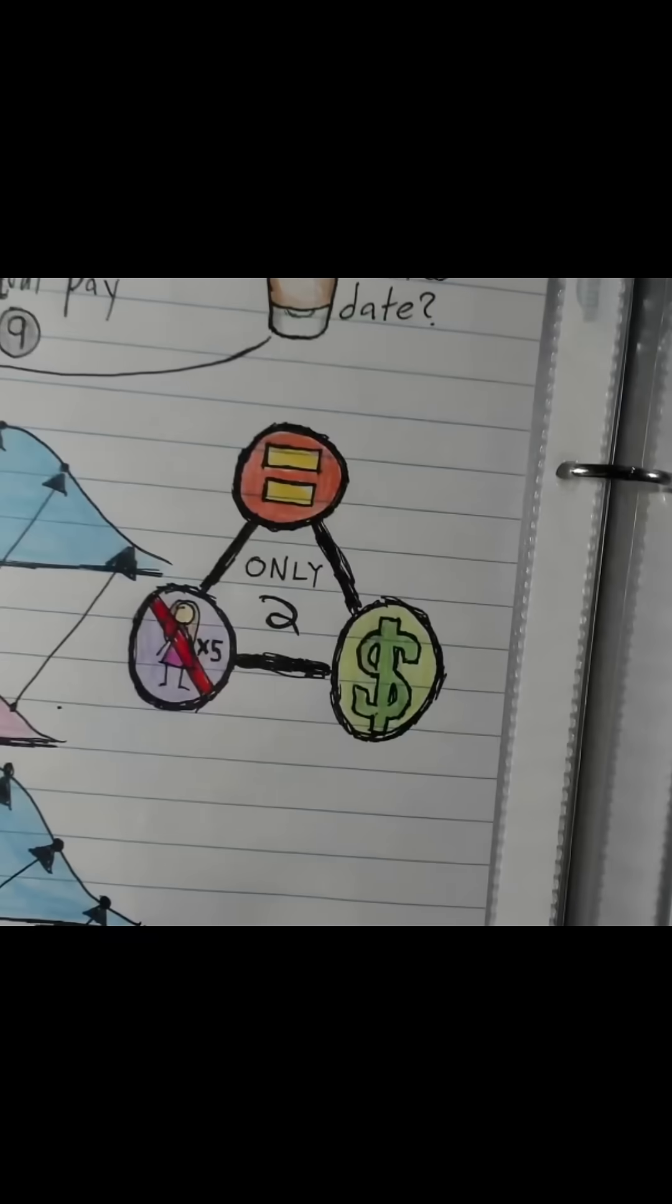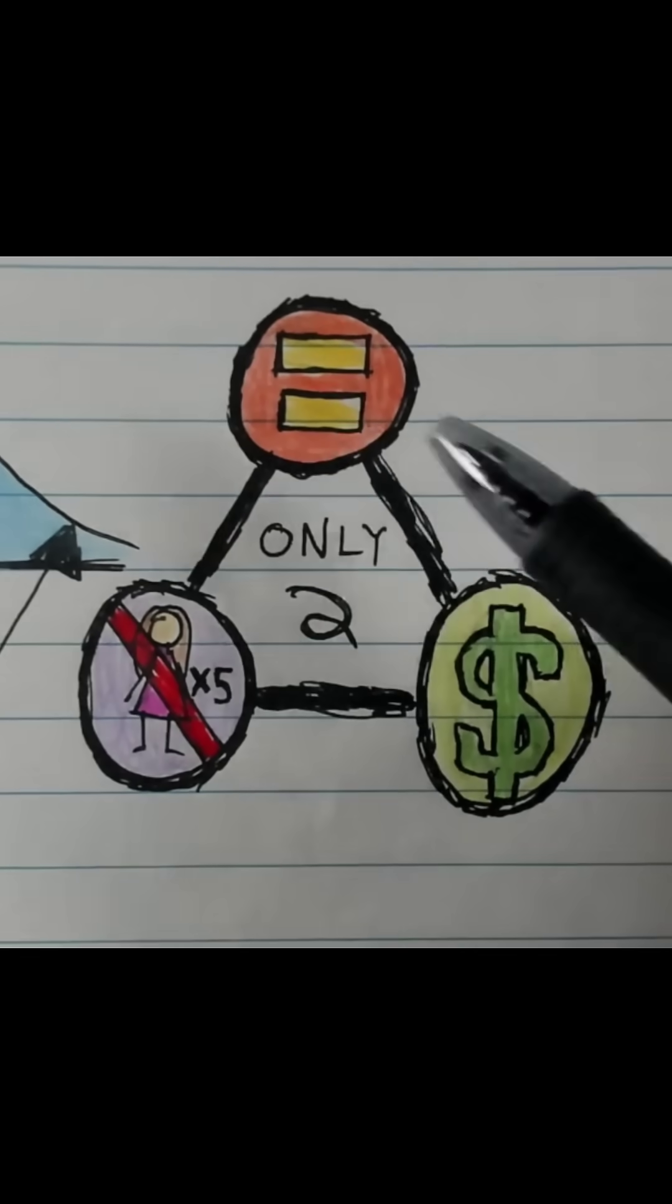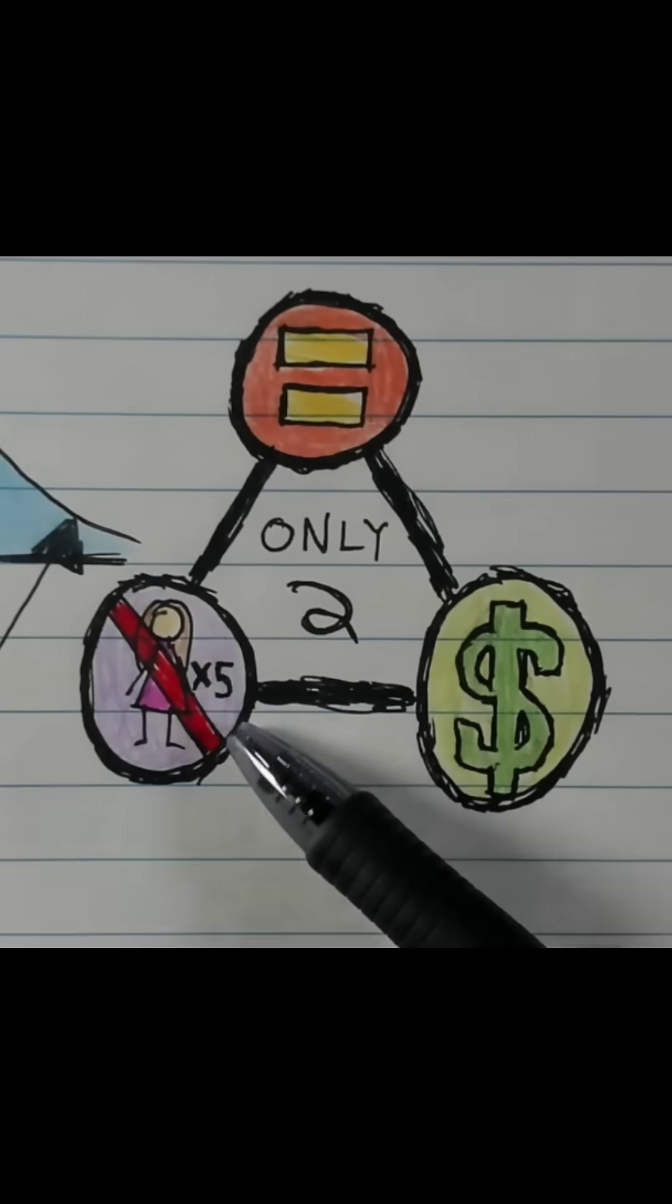People seem to like these engineering triangles. This one is equal pay by law, men pay for everything, and men have no hoes.